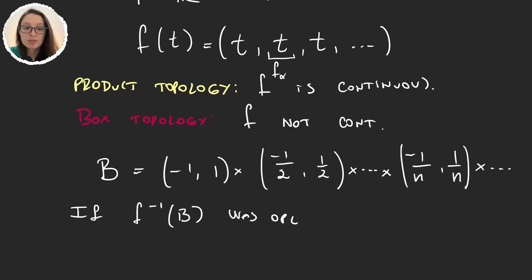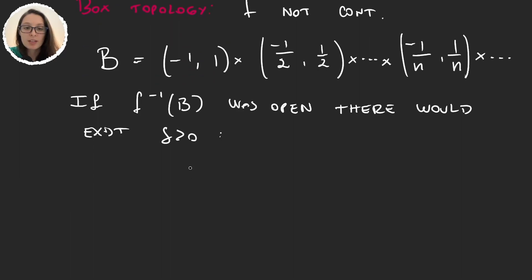Well, what happened if it was? Then there would exist some number δ > 0, such that the interval (-δ, δ) was a subset of the pre-image of B. This is simply because 0 is an element here. Because 0 is an element in each of these open sets, then obviously f(0) = 0, and so it's in this pre-image. So there must be a neighborhood of 0 that's a subset of these sets. This is if the set was open.